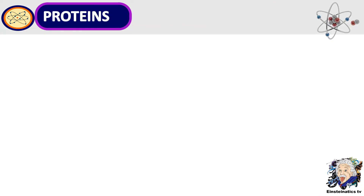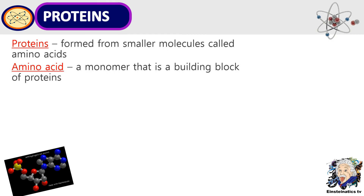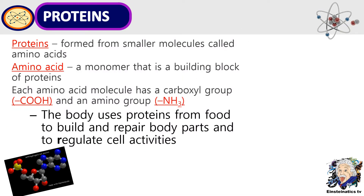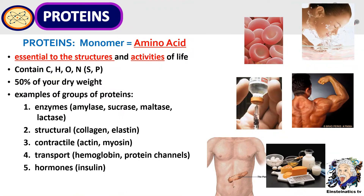The next type of macromolecule is proteins. Proteins are formed from smaller molecules called amino acids. Amino acids are monomers that serve as the building blocks of proteins. The main function of proteins in our body is that the body uses protein from food to build and repair body parts and to regulate cell activities. The building block of proteins, as we all know, are amino acids, and the main function of proteins is that they are essential to the structures and activities of life. Proteins are made up of carbon, hydrogen, oxygen...